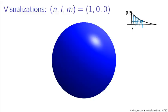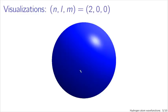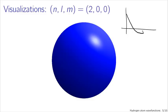So if that was boring, let's look at n, l, m = 2, 0, 0. That one's kind of boring as well, though not quite as boring — it's just difficult to see. If we sliced this in half, there would actually be a region where the particle is unlikely to be found inside this sphere. Our radial function, with spherical harmonics again trivial, decreases, drops below zero, and then comes back.